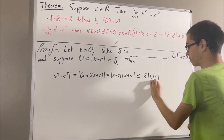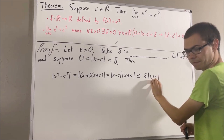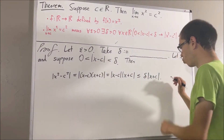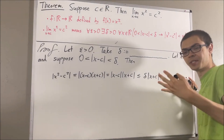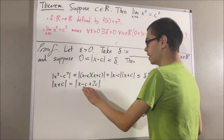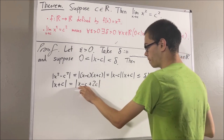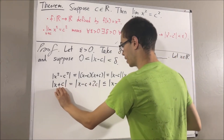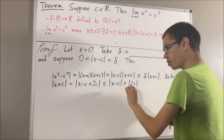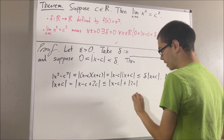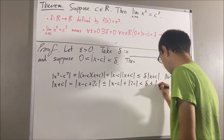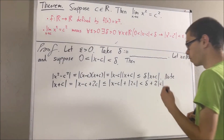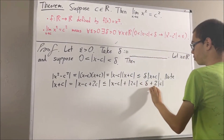Now we just have to take care of the absolute value of x plus c. Maybe we can somehow relate absolute value of x plus c to absolute value of x minus c. Let's rewrite x plus c as x minus c plus 2c. By the triangle inequality, the absolute value of this is less than or equal to the absolute value of x minus c plus the absolute value of 2c. We have rewritten absolute value of x plus c using absolute value of x minus c. Since absolute value of x minus c is less than delta, this entire thing must be less than delta plus absolute value of 2c, which equals delta plus 2 times the absolute value of c.